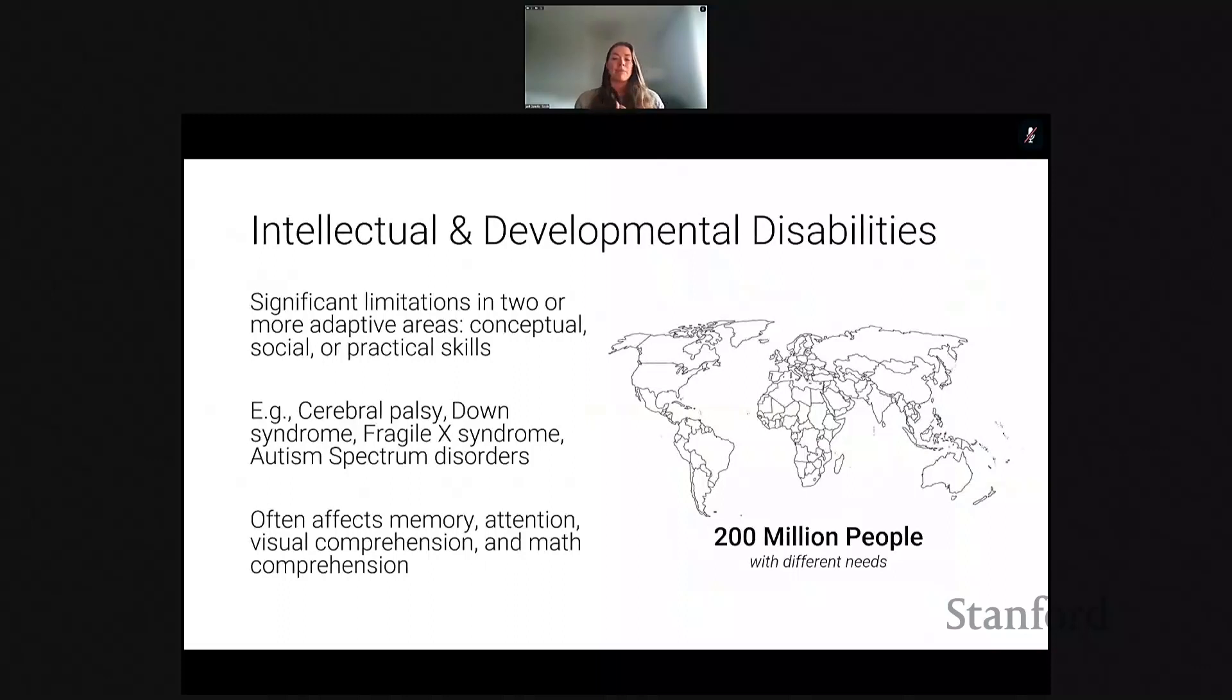I want to take a step back to explain what I mean by IDD. IDD, or intellectual and developmental disability, is characterized by limitations in social, conceptual, or practical skills. It affects over 200 million people worldwide. These disabilities often result in differences in memory, attention, visual comprehension, or math comprehension. As you might imagine, all of these are critical skills for people trying to work with data visualizations. In practice, these limitations mean that the sheer complexity of existing tools, including complex multi-view designs, challenges in interaction, and building insights over time that traditional tools like Tableau and Power BI are designed to support, end up being prohibitively challenging.